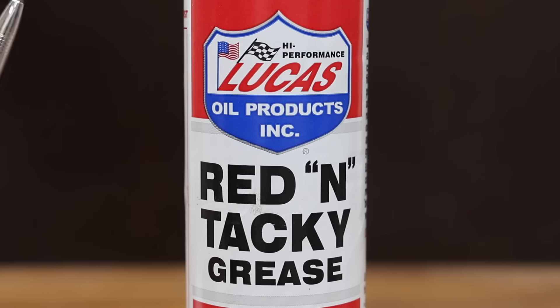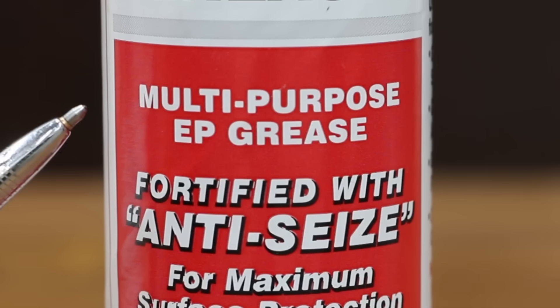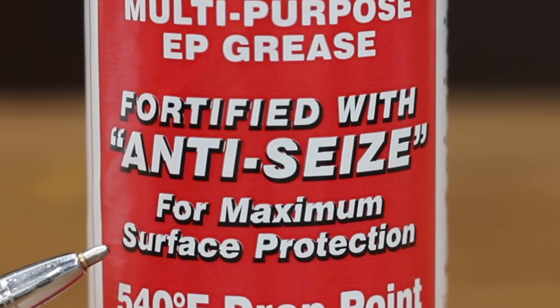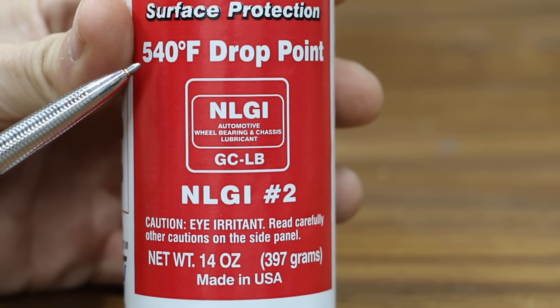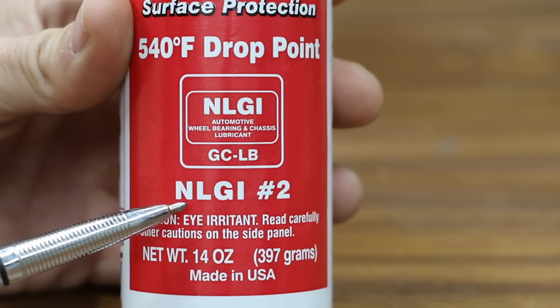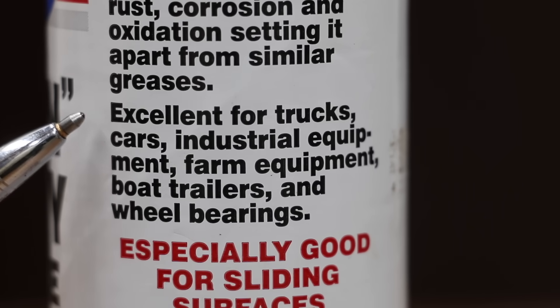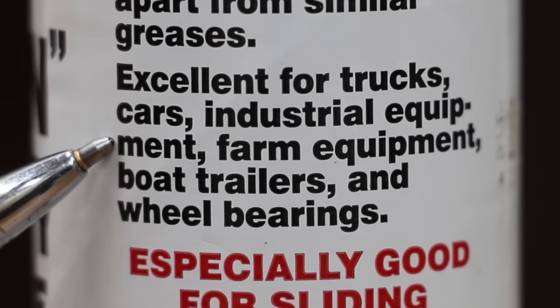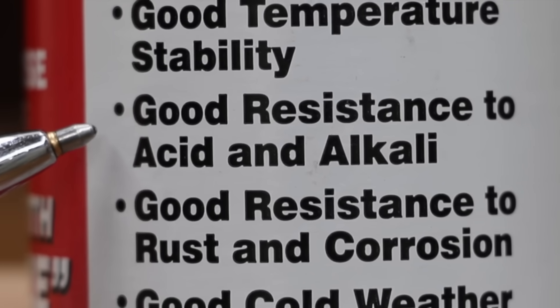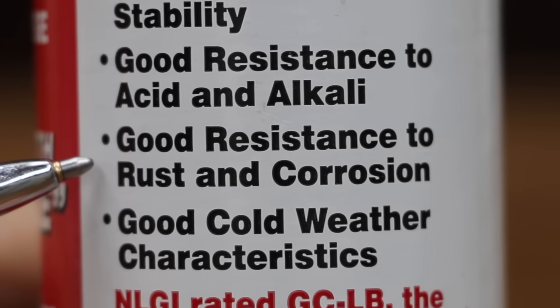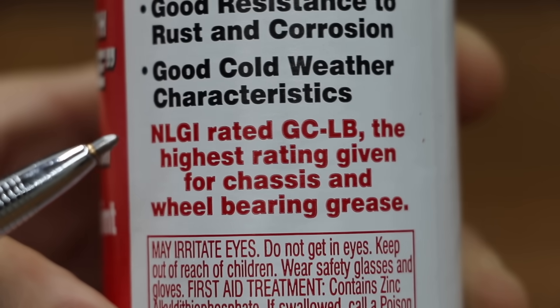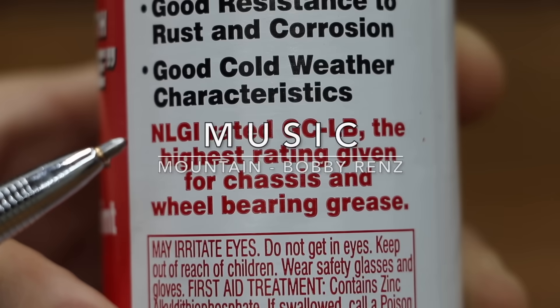Costing twice as much as the Supertech is this Lucas red and tacky grease. It's a multi-purpose extreme pressure grease fortified with anti-seize for maximum surface protection. It claims that its drop point is 540 degrees Fahrenheit. We're going to test that. Just like Supertech, this is NGLI number 2 grease. Excellent for trucks, cars, industrial equipment, farm equipment, boat trailers, and wheel bearings. Good temperature stability, good resistance to acid and alkali, good resistance to rust and corrosion, good cold weather characteristics. NGLI rated for GC LB, the highest rating given for chassis and wheel bearing grease.